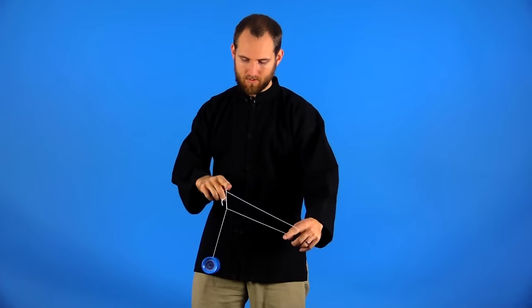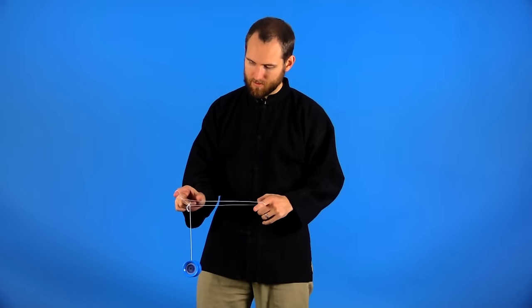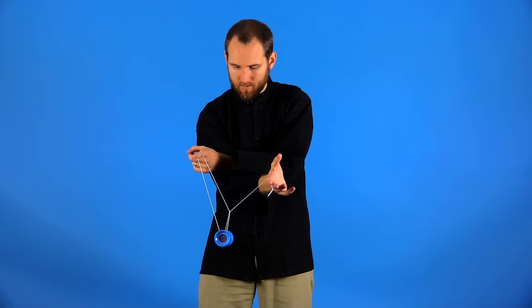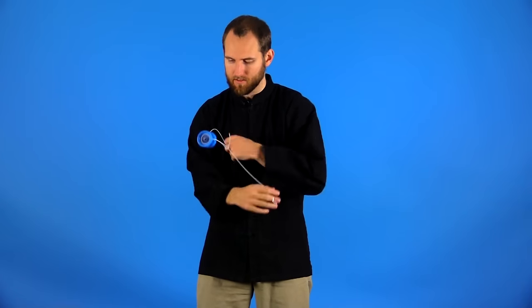So to complete this trick, from here you're going to pop the yoyo up and land it into this front string and cross your hands with your throw hand going underneath and pull out your index finger. You'll end up in a green triangle like this.